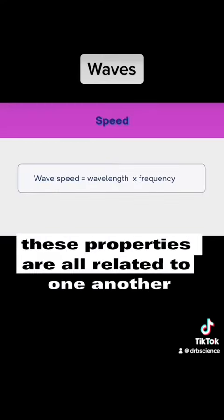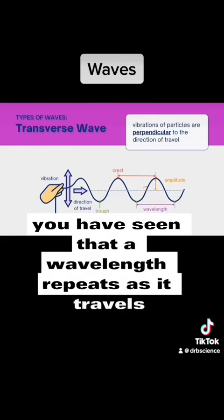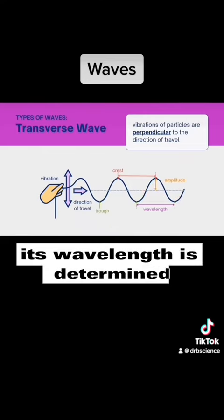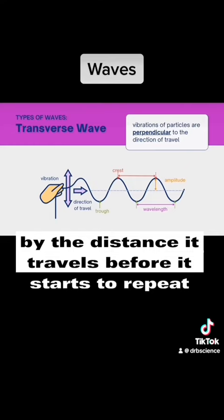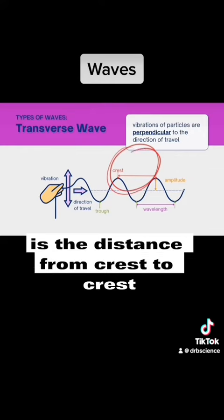These properties are all related to one another. You have seen that a wavelength repeats as it travels. Its wavelength is determined by the distance it travels before it starts to repeat. The wavelength of a transverse wave is the distance from crest to crest.